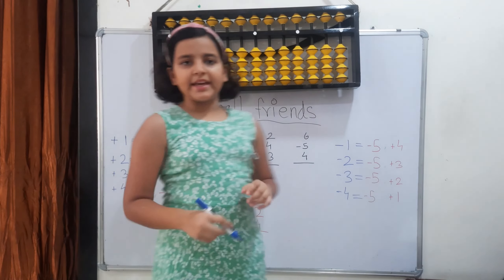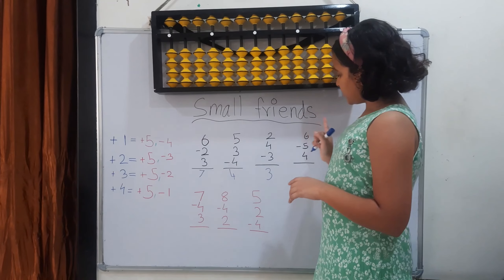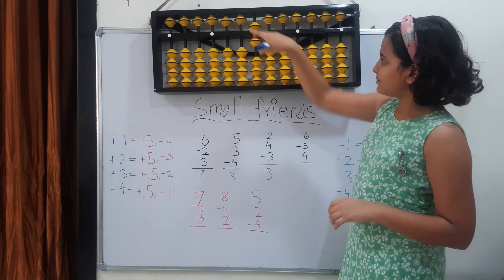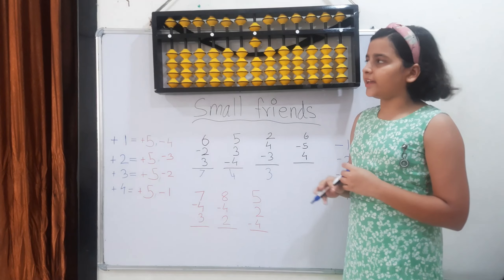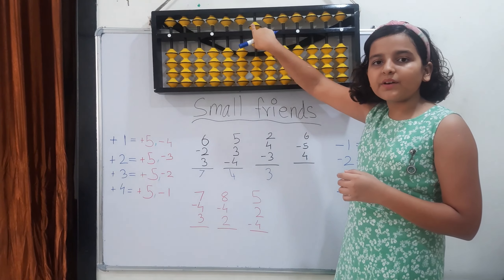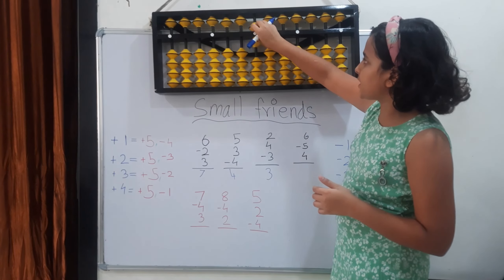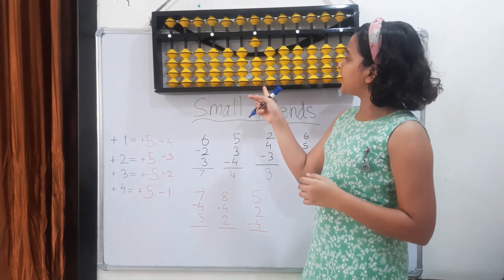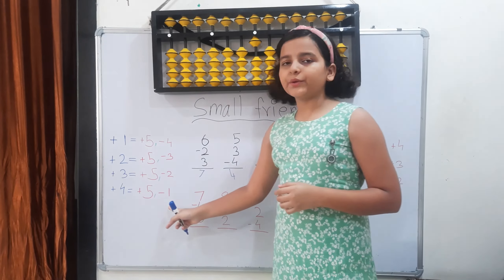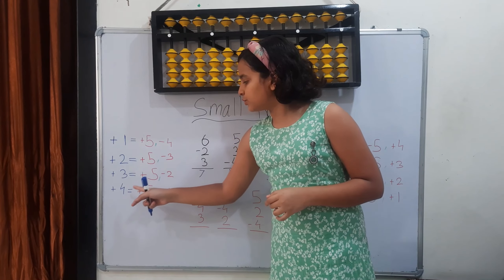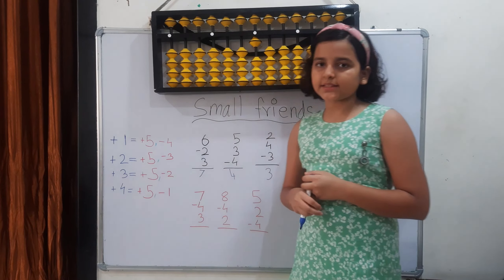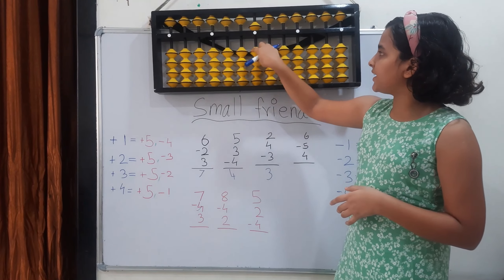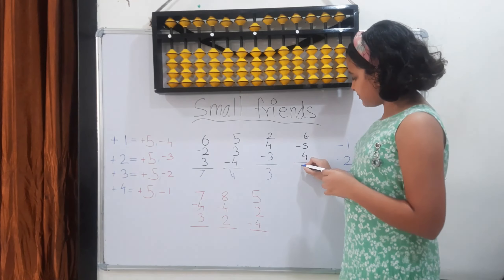Now the next sum: 6. I set 6, then minus 5 — yes, I have 5 available, so let's minus it directly. Then add 4, but I only have 3 bits, so I use the formula: plus 4 equals plus the 5 minus the 1. Plus the 5 and minus the 1. The answer is 5.